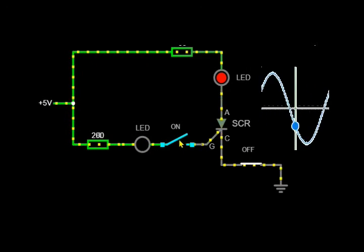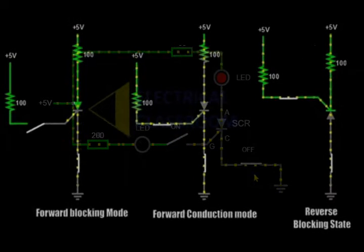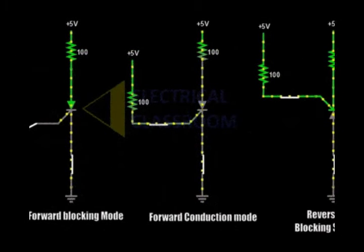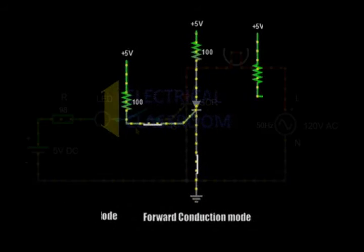Thyristors are components that work with current. That is, a small gate current controls a larger anode current. Thyristors conduct current only when forward biased and current is applied to the gate.